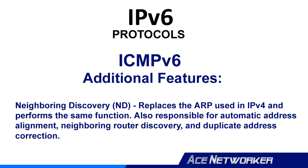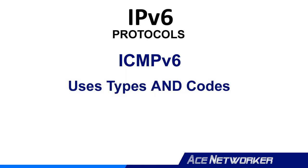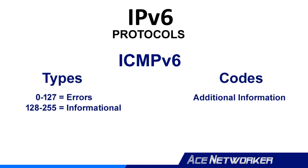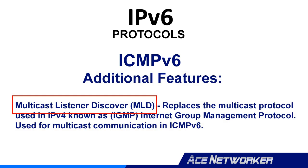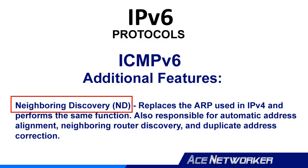When it comes to ICMP used in IPv6, better known as ICMPv6, know the basics: there are types and codes. Types 0 through 127 are for error messages; types 128 through 255 are for informational purposes. Codes break down different reasons for each type returned. Two additional features of ICMPv6 not found in ICMPv4 are Multicast Listener Discovery, or MLD, and Neighbor Discovery, or ND.